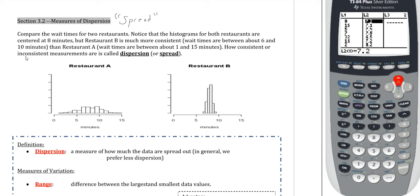In 3.1 we talked about how to calculate the measure of the centers — how to describe the middle of the data set. However, that's only one piece of describing a data set as a whole, and usually it's going to be a two-step process. You describe both the center of the data and then how the data spreads away from that center, because just the middle of the data is typically not enough, as represented on these two graphs here for two different restaurants.